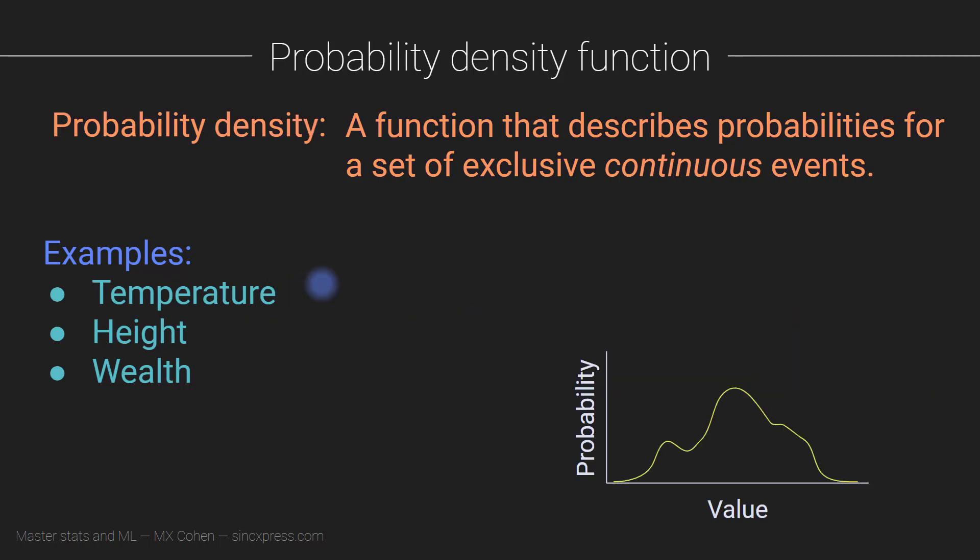Now, a probability density function is almost the same thing, except these are for continuous events. So these are events that don't really get discretized or are not categorical. You can think of the probability of a certain temperature, or the probability of someone being a certain height, or the probability of having a certain amount of money.